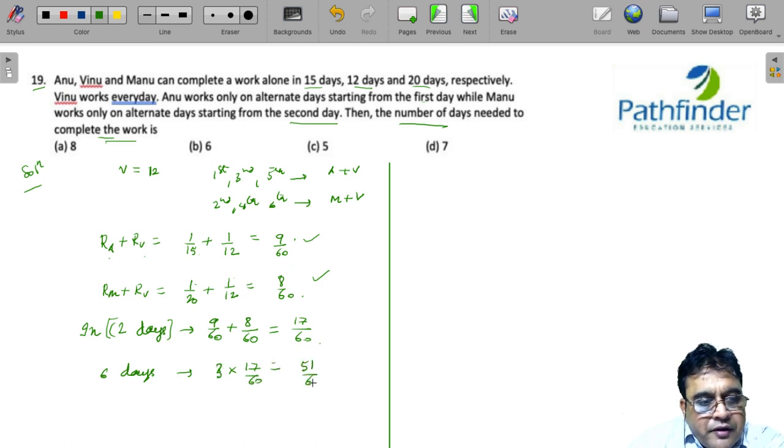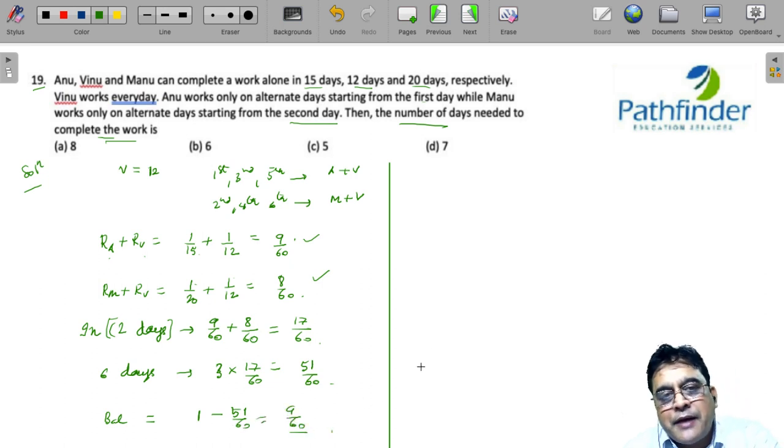And the balance work left at the end of 6 days is 1 minus 51/60, that is 9/60. That is the balance amount of work left.